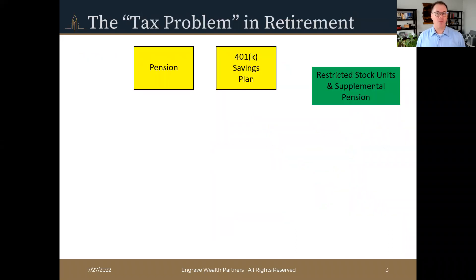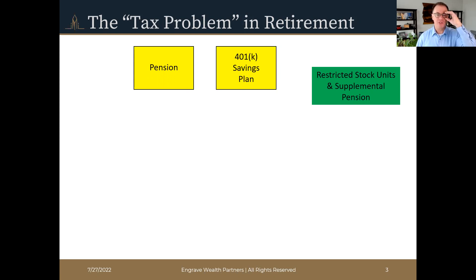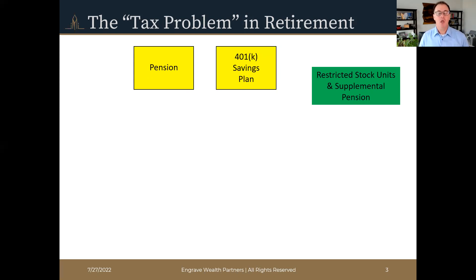So where does your retirement begin? Most of you are aware that in your working years, you have multiple sources potentially for building retirement savings. Some of you are going to have access to a company pension plan. Most of you have access to a 401k savings plan. And some of you will also have access to supplemental retirement plan benefits, such as restricted stock units or RSUs, as well as supplemental pension plans. We want to consider all of these when it comes to generating a retirement income, because each one is going to have individual characteristics that will make a difference when it comes to your taxes.